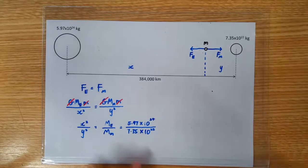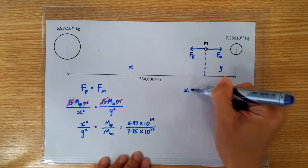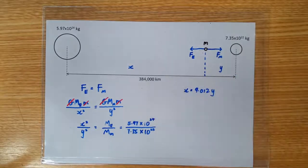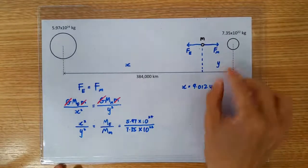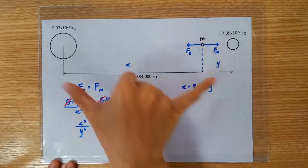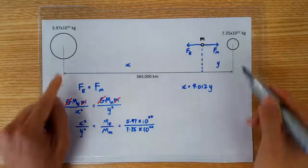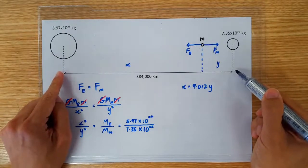If we take the square root, we can work out that x is 9.012y, which means that if this distance is y, then this distance is 9.012y, which makes this entire distance 10.012y.